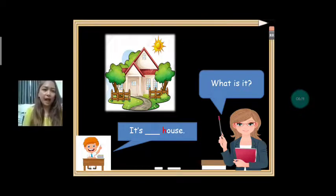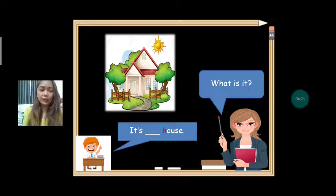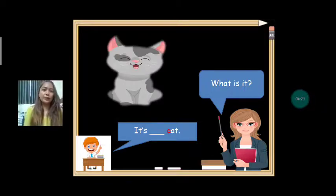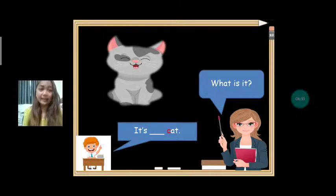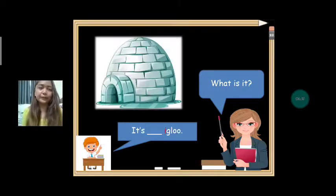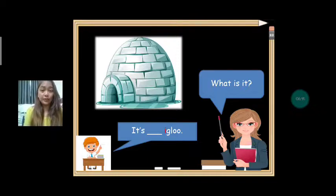Next vocabulary is house. House starts with letter H, so it's a house. We have cat — it's a cat. Here we have igloo — igloo starts with letter I. It's an igloo.